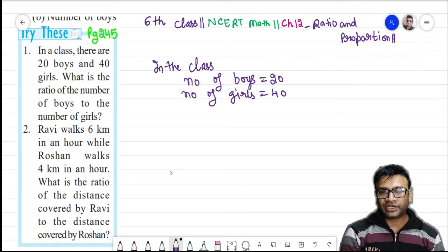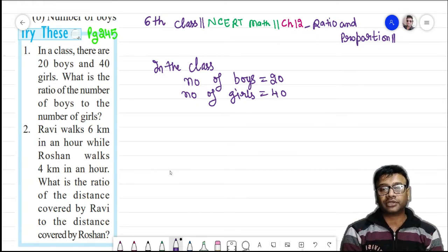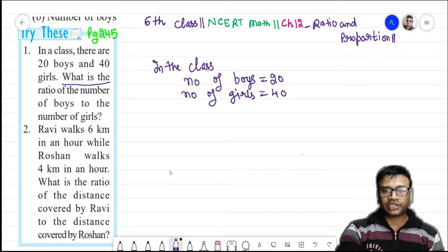What do we need to find out? We need to find out the ratio of the number of boys and the number of girls which we will get from this statement. You need not to make your statement but you can write the statement from this question.